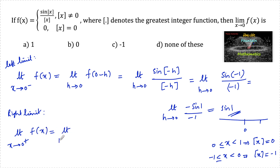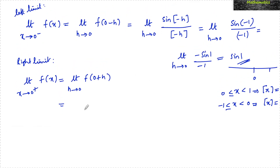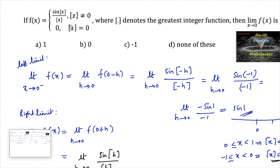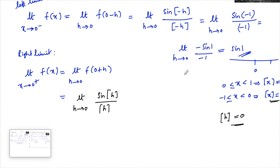Now the right-hand limit: limit h tends to 0 of f of 0 plus h, which equals limit h tends to 0 of sin of [h] divided by [h]. Since as h tends to 0 from above, [x] equals 0 for x lying between 0 and 1, so [h] equals 0. And when [x] equals 0, f of x is defined as 0. So the right-hand limit is 0.